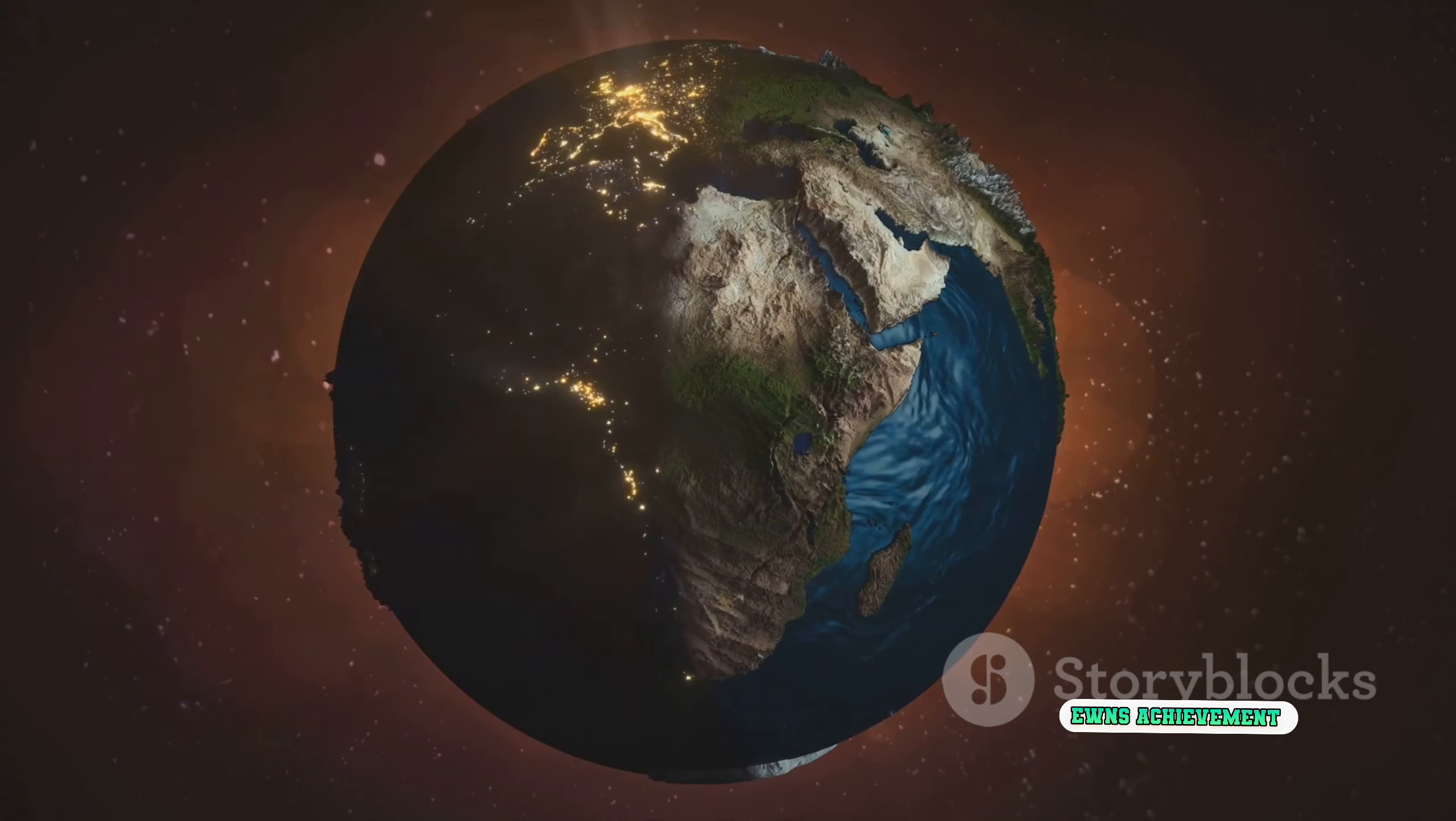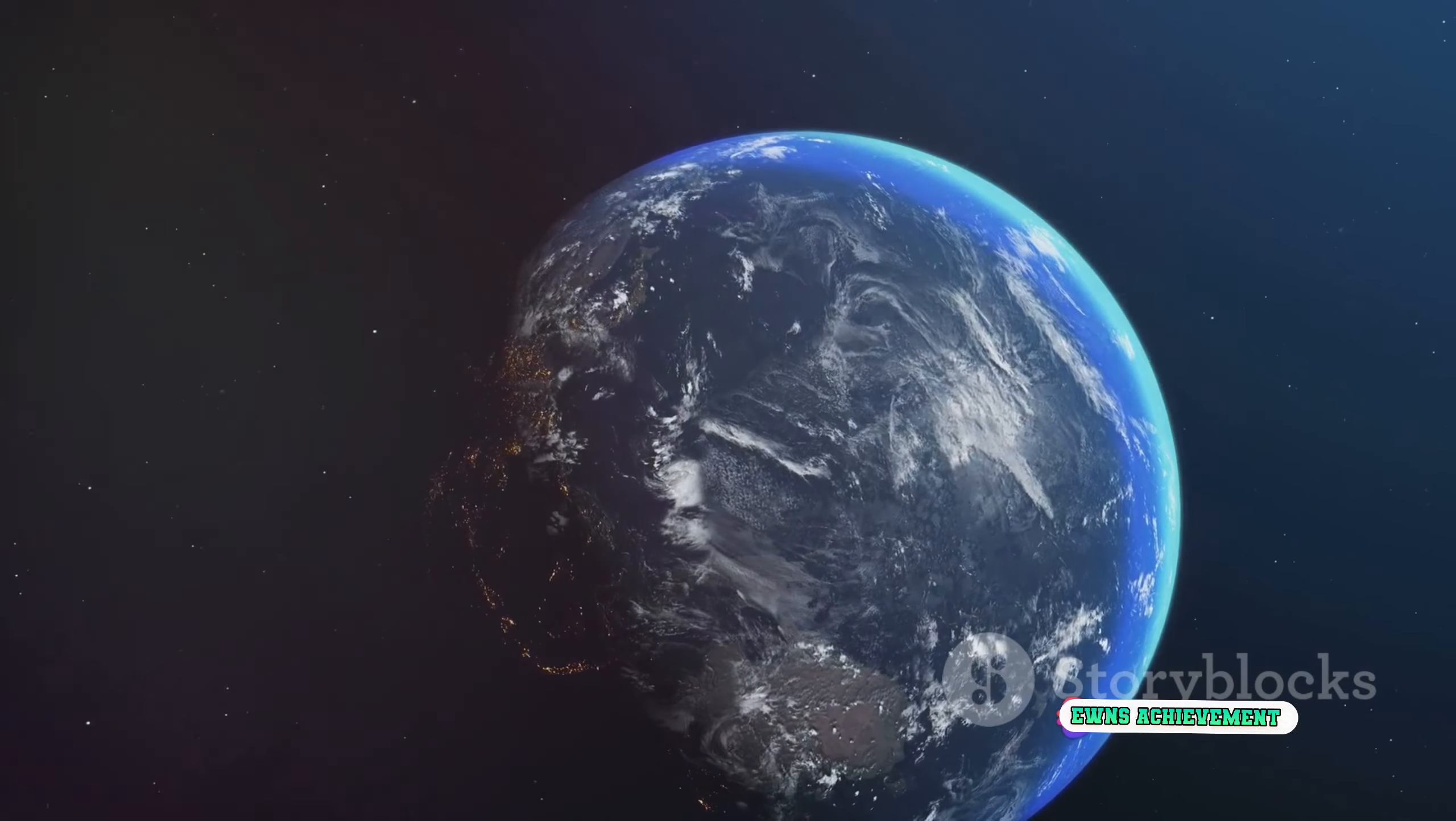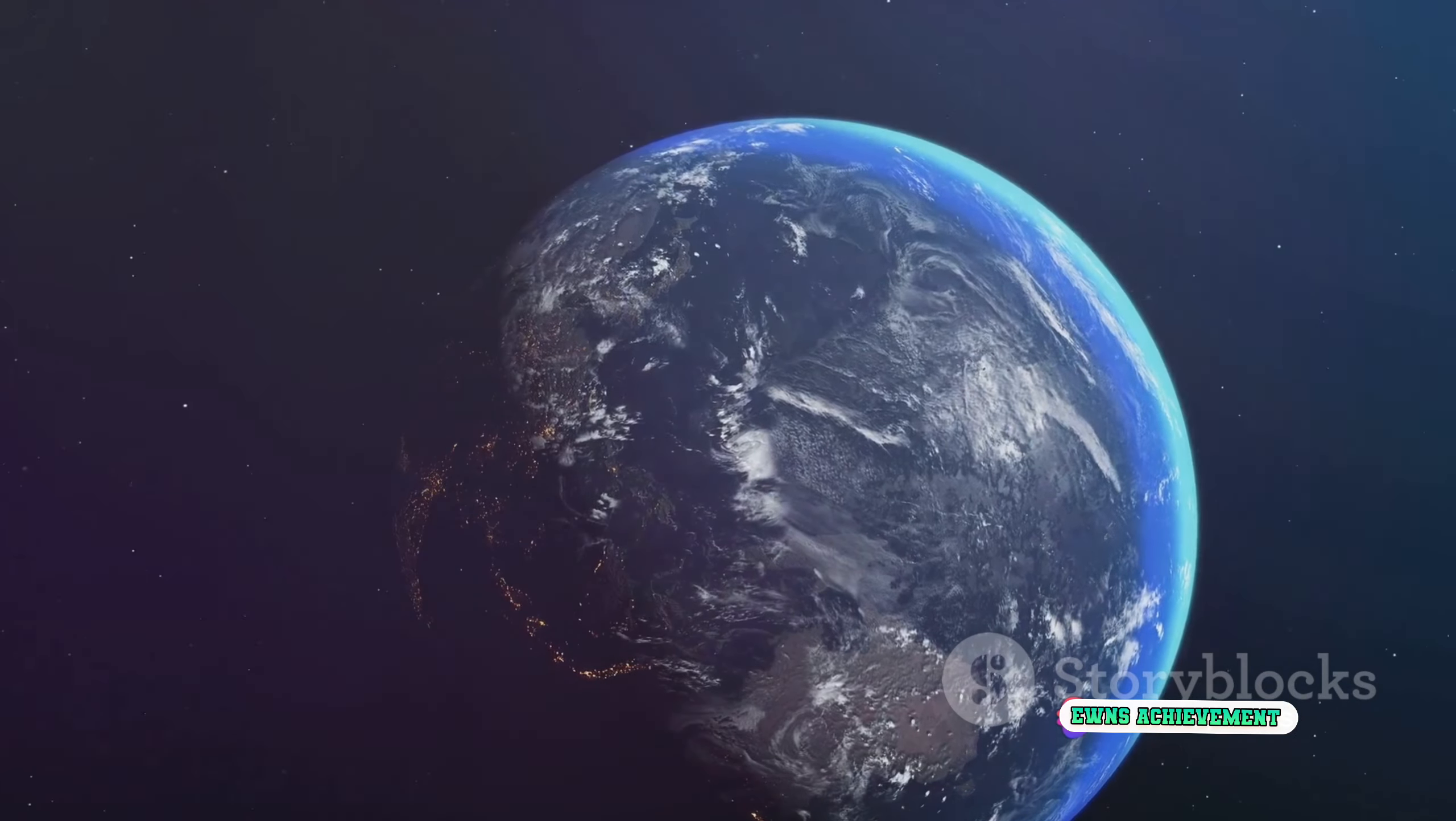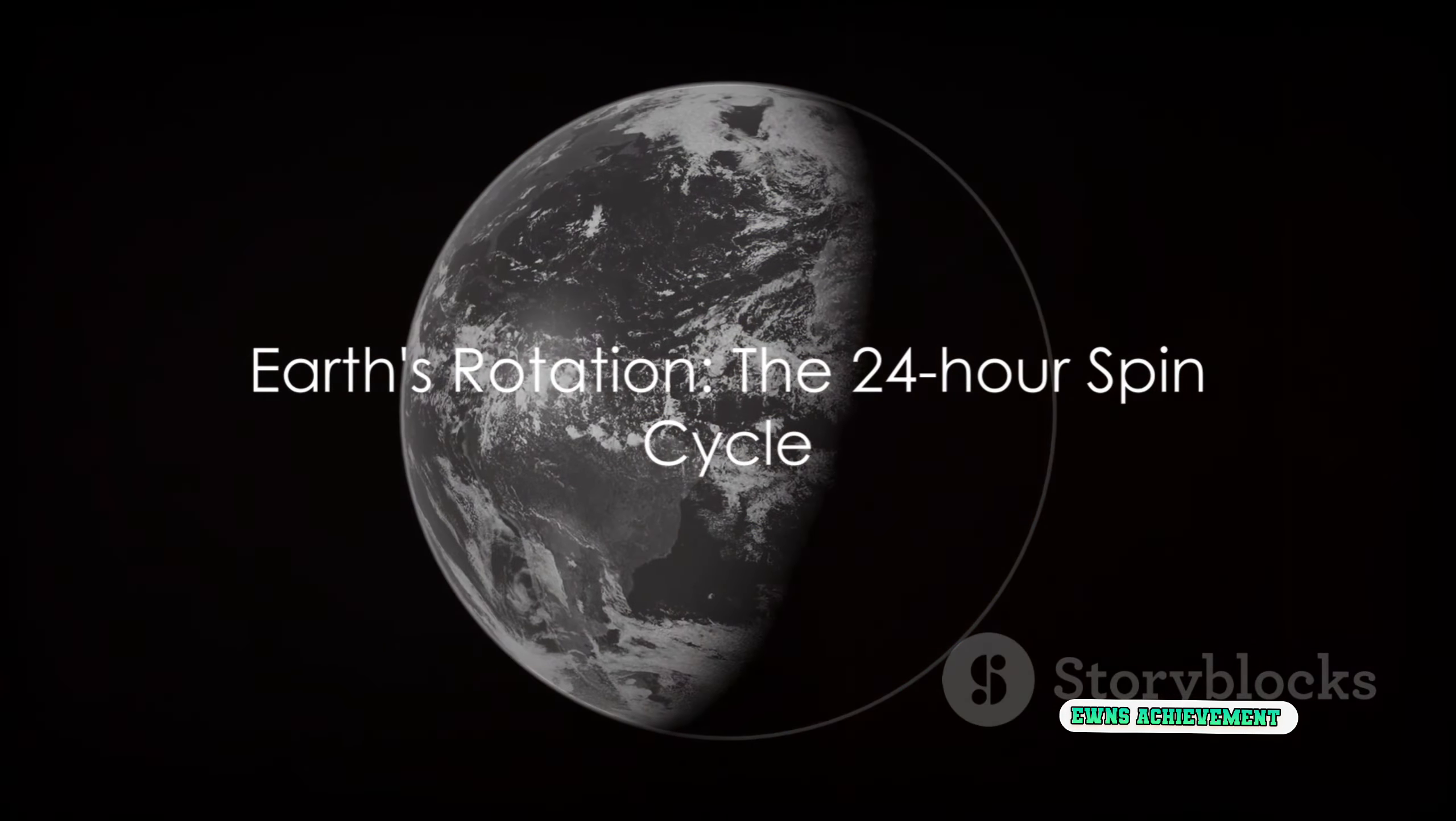Just like a top, our planet Earth rotates around an imaginary line that passes through its north and south poles. This imaginary line is known as its axis. Now, how long do you think it takes for the Earth to complete one full spin on its axis? Well, the answer is approximately 24 hours. Yes, that's right, the duration of a day.